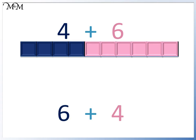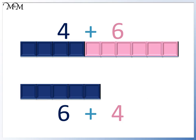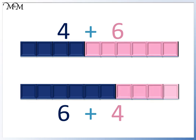Here is the same sum, but with the numbers 4 and 6 in a different order. Here is 6: 1, 2, 3, 4, 5, 6, and here is 4: 1, 2, 3, 4.